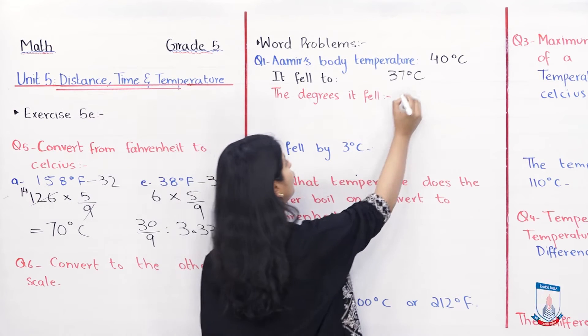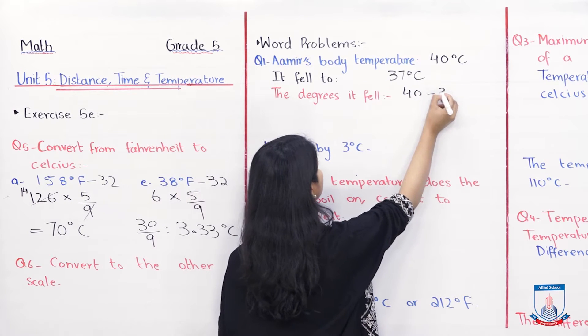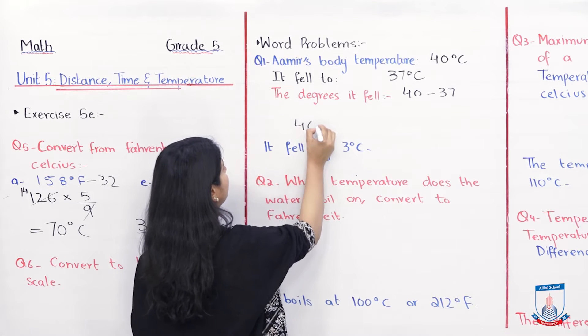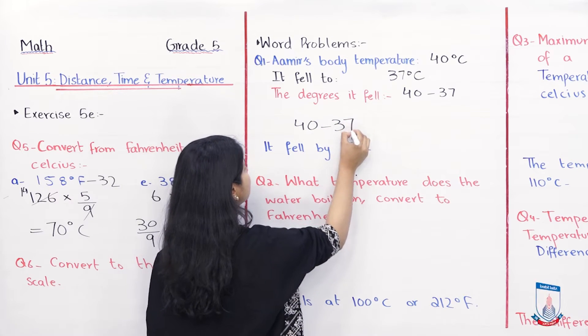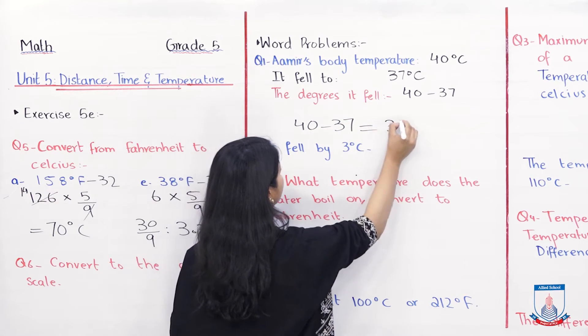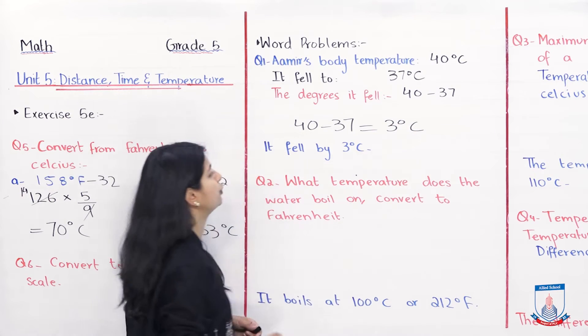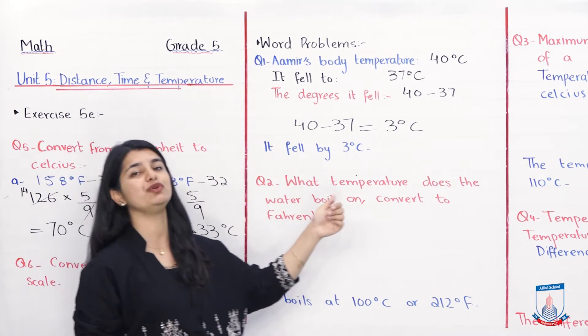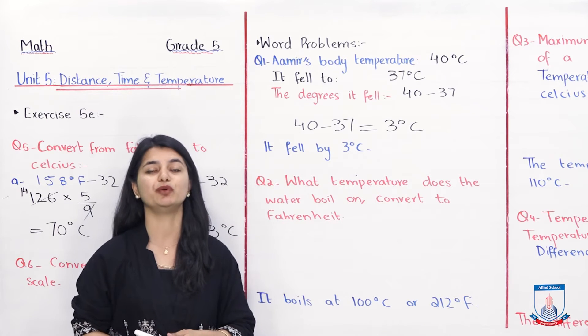So we have to simply do 40 minus 37. So you will subtract 40 out of 37 and you get 3 degree Celsius. So your answer is it fell by 3 degree Celsius. That was it for question number one.